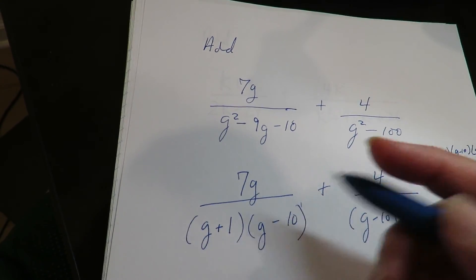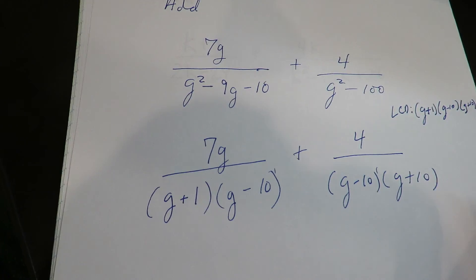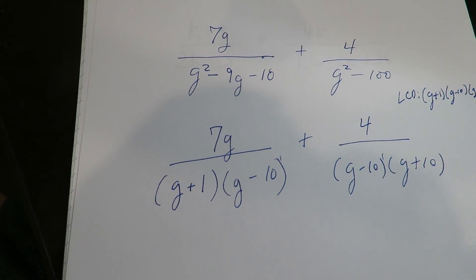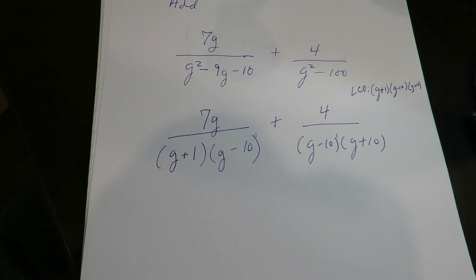So the highest exponent is a 1 on these. So it would just be 1 here. Highest exponent is 1 here. Highest exponent is 1 here. So I just need whatever the highest amount is in any particular pile.